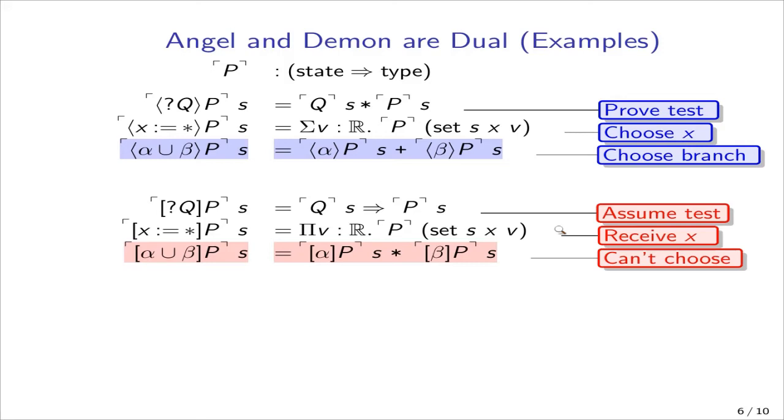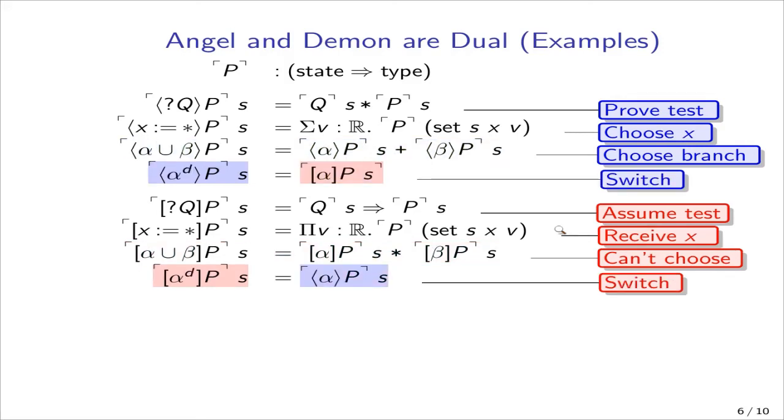If I am playing a choice and angel is in control, this would be a disjunction. I have to give an injection that says do I go to the left and prove p or do I go to the right and prove p after playing beta. If demon is in control, then I don't know whether I'll be playing alpha or playing beta. So I have to give a pair. I am prepared to play alpha, I am also prepared to play beta. Duality, as I have suggested, is implemented by switching diamonds and boxes. So an angelic way to play the dual of alpha is simply a demonic strategy for alpha.